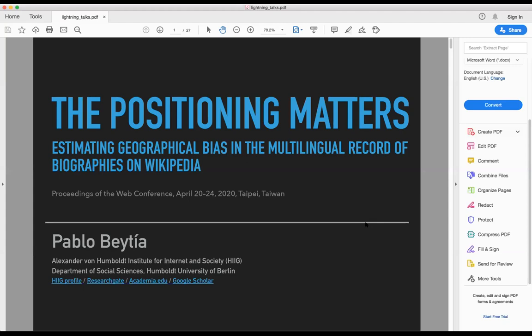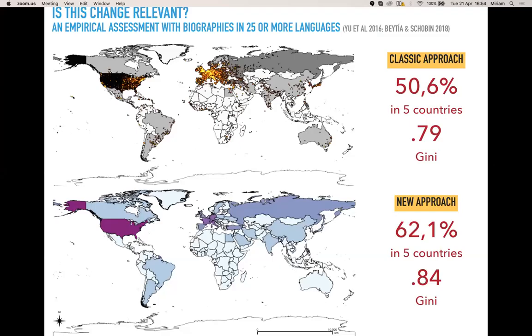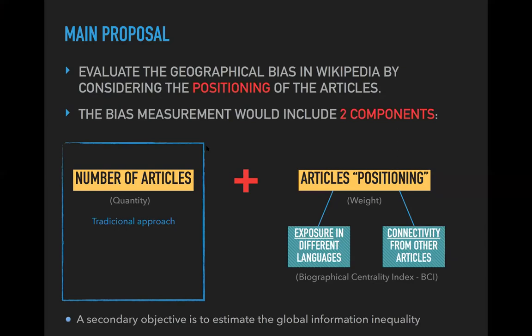Up to date, geographical bias has been studied only by analyzing the number of articles associated with places. But that approach doesn't consider the weight or centrality of the articles. I propose a different approach that is sensitive to differences between articles. My proposal is to consider simultaneously two aspects: the number of articles linked to places (the traditional indicator), and what I call the 'positioning' of articles — their internal weight within the information system.